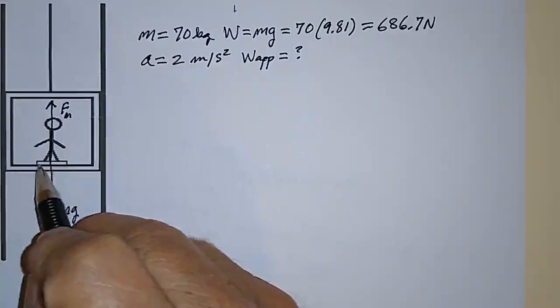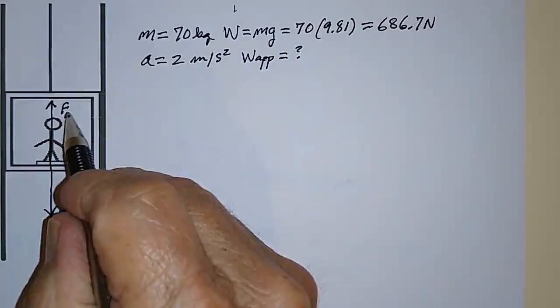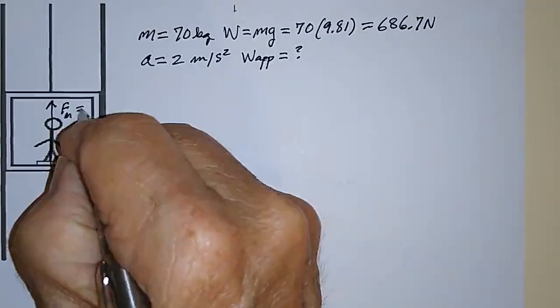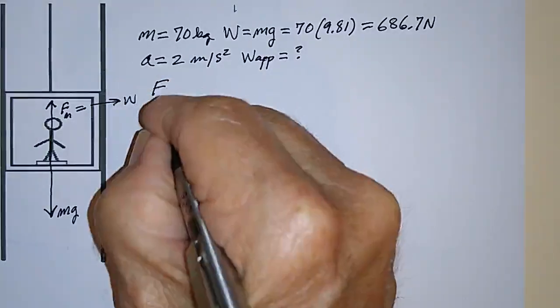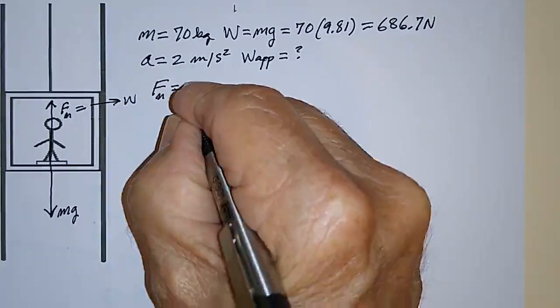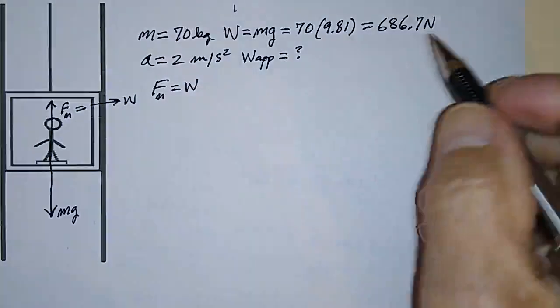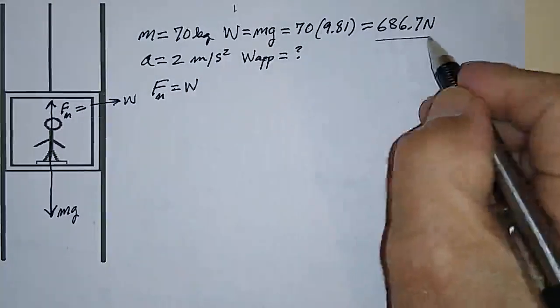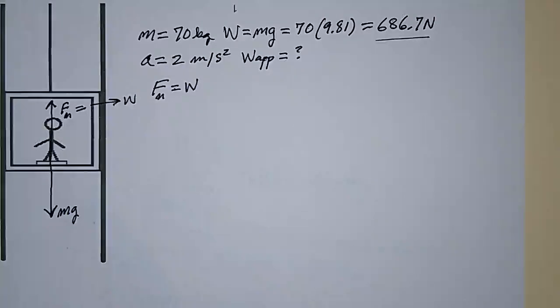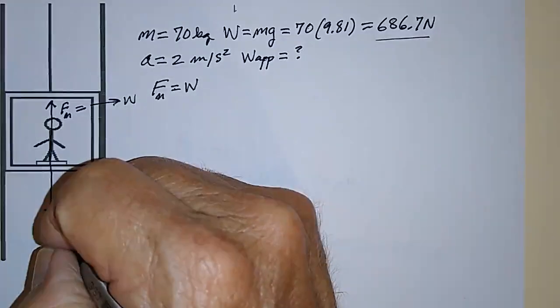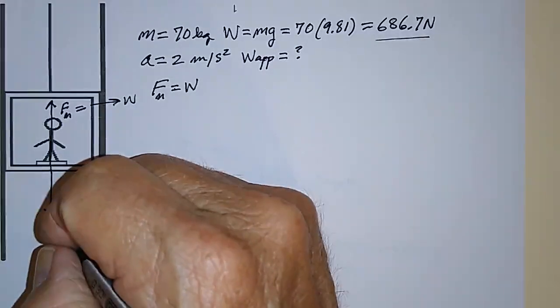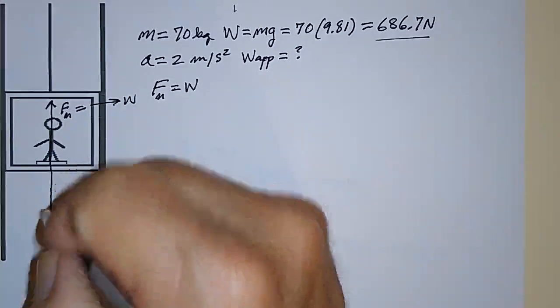The normal force is the force that the scale exerts on his feet and this is what you read on the scale. This is equal to W. The normal force on the scale is equal to W, which is just equal to mg, in this case 686.7 Newtons. So if he starts accelerating downward, then his apparent weight will be less.